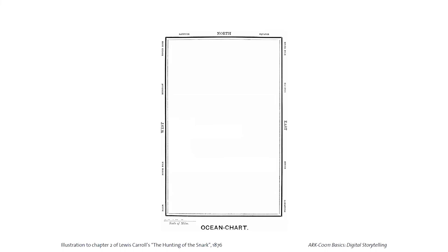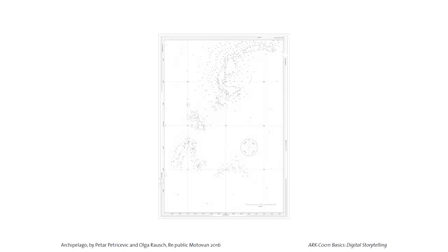A funny reference: The Hunting of the Snark by Lewis Carroll shows an ocean chart that is essentially empty — but it's not completely blank, because the scale is there and the directional markers — north, south, west, east — are present. Students made a drawing called Archipelago that directly used this as a reference, drawing a fictional archipelago with elements from the city we worked in back in 2016.